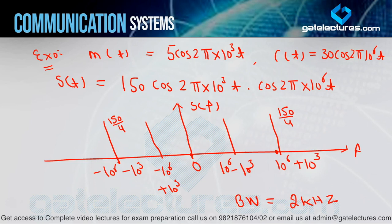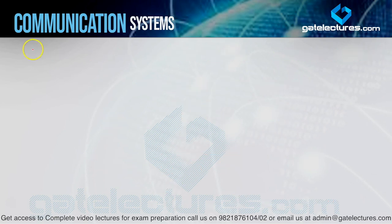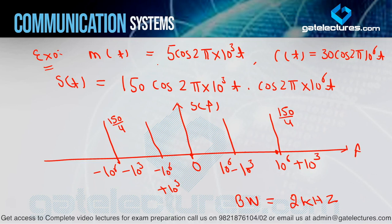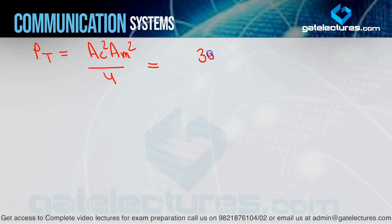For power: formula is AC²·Am²/4. AC = 30, Am = 5. So power = 30² × 5² / 4 = 900 × 25 / 4 = 5625 watts. This was a very easy numerical. I repeat: if DSB-FC is clear to you, you will have no problem with DSB-SC, especially in the basic part studied in today's video.